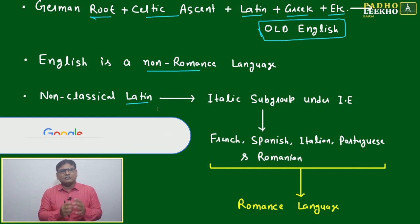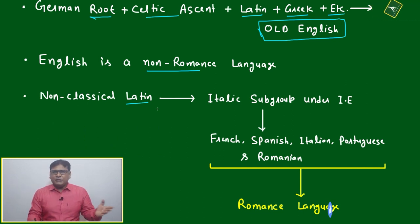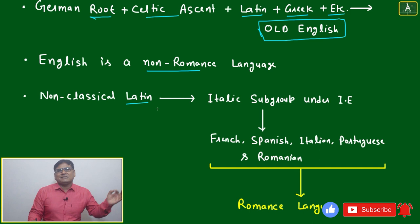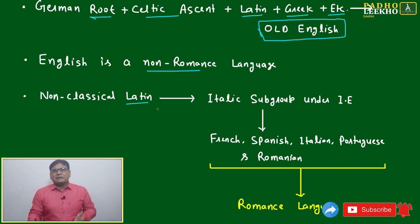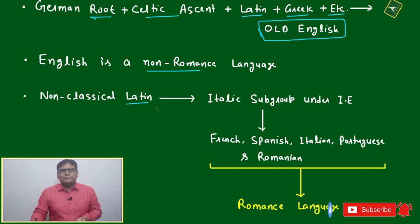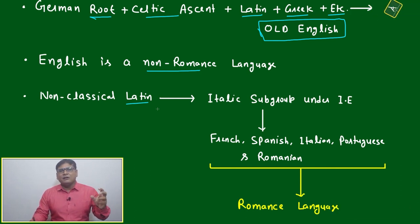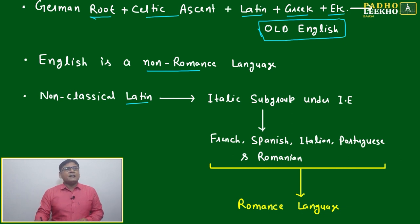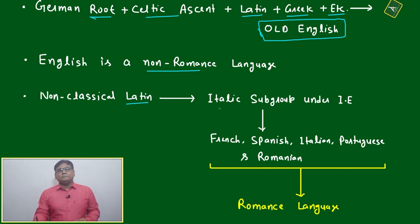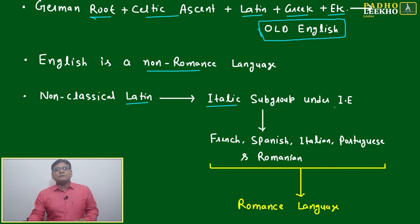That structured form is called classical Latin. When we say classical — whether classical English, non-classical English, classical Hindi, or non-classical Hindi — we mean using the defined structure and rules and regulations of that language. Non-classical Latin developed into the Italic subgroup under the Indo-European language family.